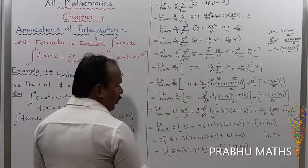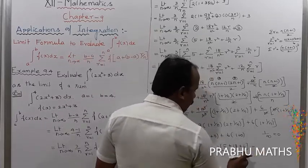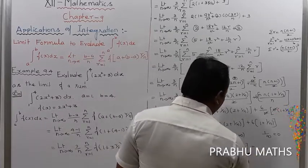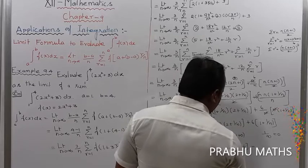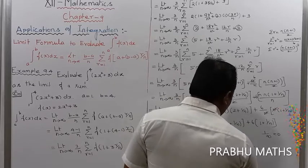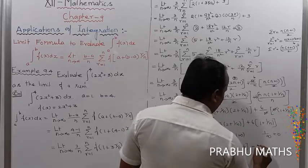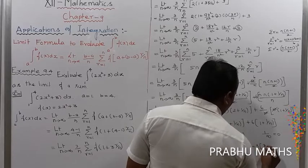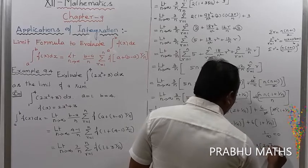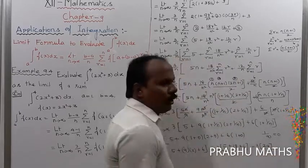So 5 plus 18 is 23, plus 6 is 29. Therefore the answer is 3 into 29 equals 87. Once again checking the answer.